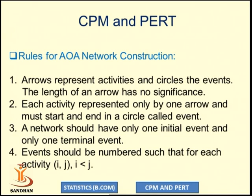Now, how to draw the AOA network diagram. There are some rules we have to keep in mind. Arrows represent the activities and circles represent events. The length of an arrow has no significance. Each activity is represented by only one arrow and must start and end in a circle called an event.